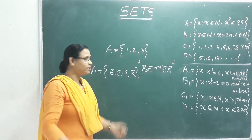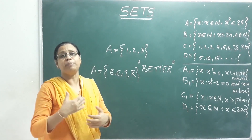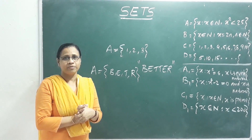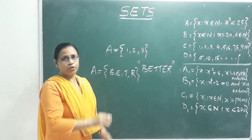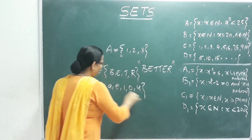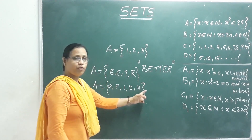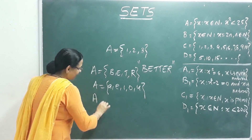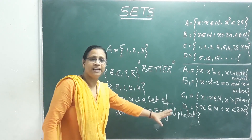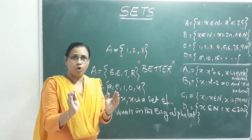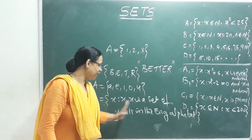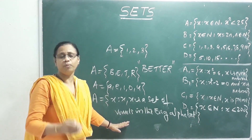The roster form lists elements directly. The set builder form uses a rule. For example, vowels in the English alphabet in roster form: A = {A, E, I, O, U}. In set builder form: A = {x : x is a vowel in the English alphabet}, meaning x possesses the property of being a vowel. This is the set builder form, also called the rule method.